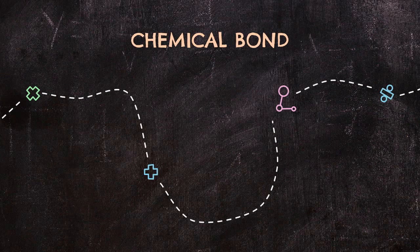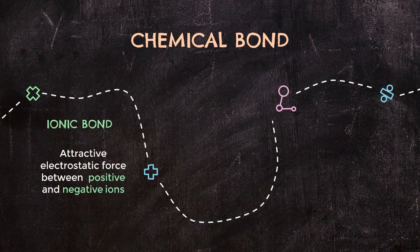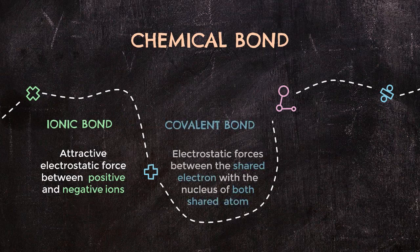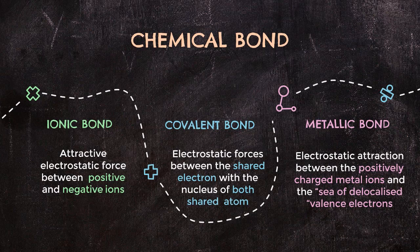In this chapter, you will be introduced to three types of chemical bonds. First, ionic bond, where electrons are transferred to form attractive electrostatic forces between positive and negative ions, involving losing and gaining of electrons. Second, covalent bond, where atoms share their electrons to form electrostatic forces between them. And lastly, metallic bond, where positively charged metal ions and a sea of delocalized valence electrons form an electrostatic attraction. Only ionic bond and covalent bond will be covered in subtopic 4.1, while metallic bond will have its own subtopic at 4.5.